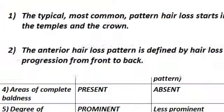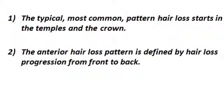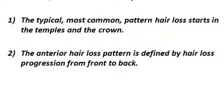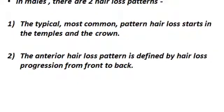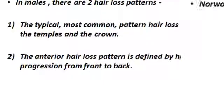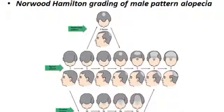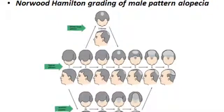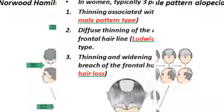In males, pattern hair loss can manifest in two patterns. The typical one starts in the temples and the crown, whereas the anterior pattern is defined by hair loss which starts at the front and slowly progresses towards the back. Alopecia in males can be graded using the Norwood-Hamilton grading of male pattern alopecia.